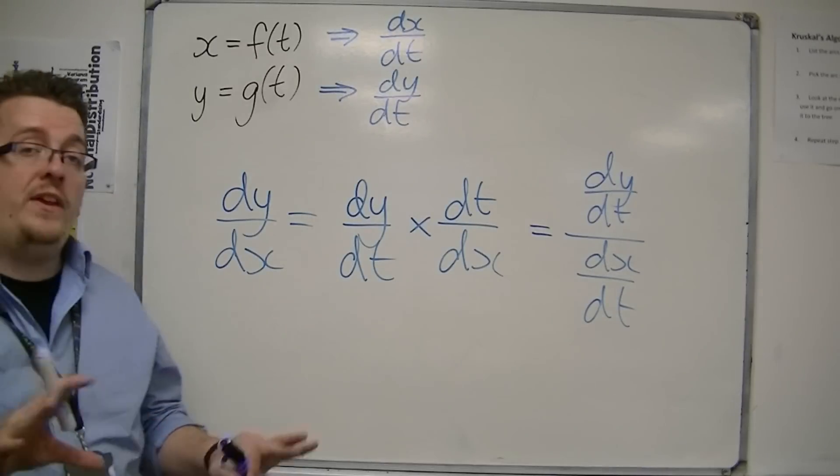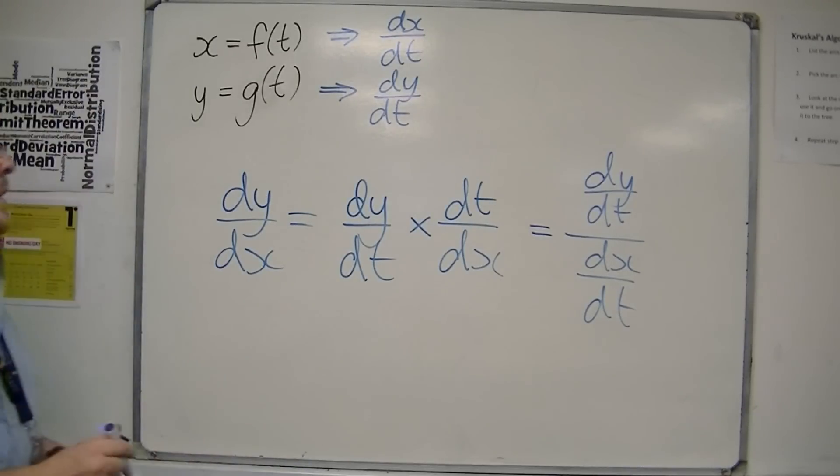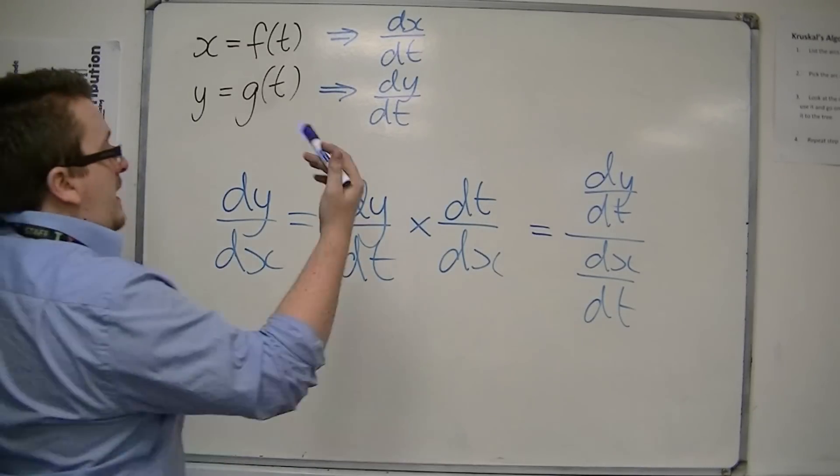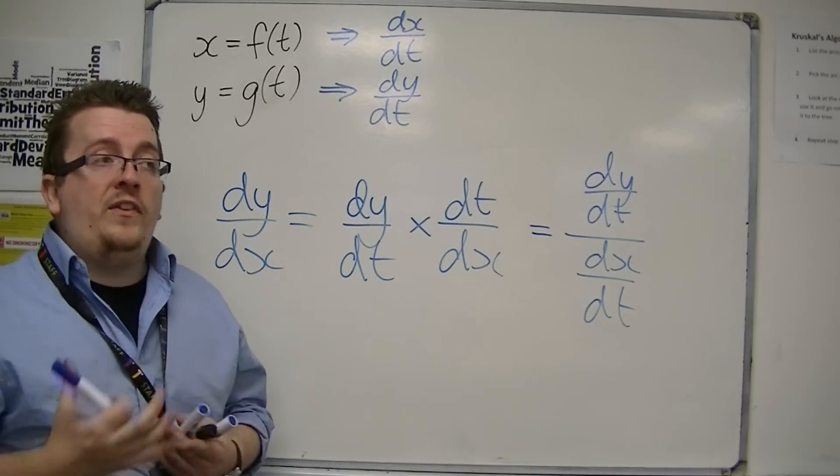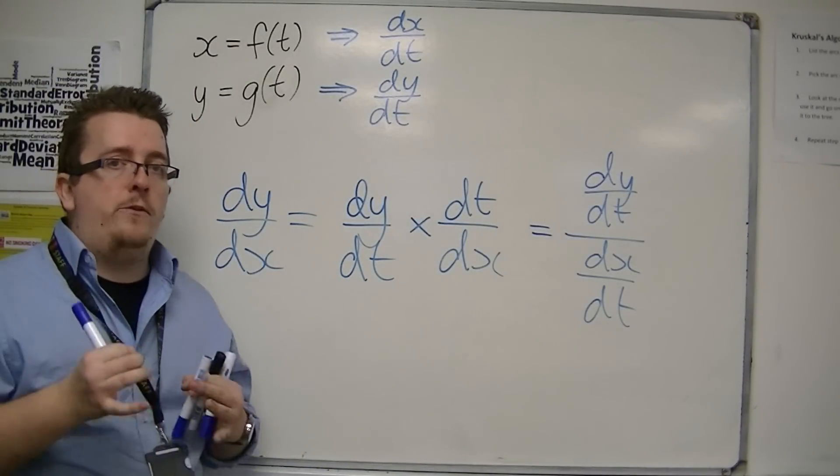And you can see it whichever way round you like. So, dy by dx is dy by dt times dt by dx. And this is how we can differentiate parametrically.